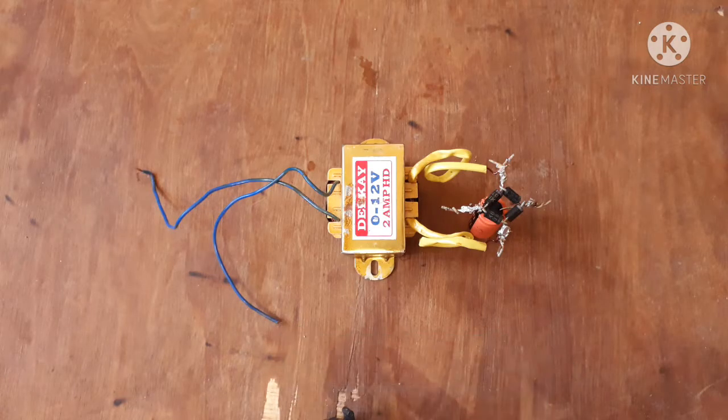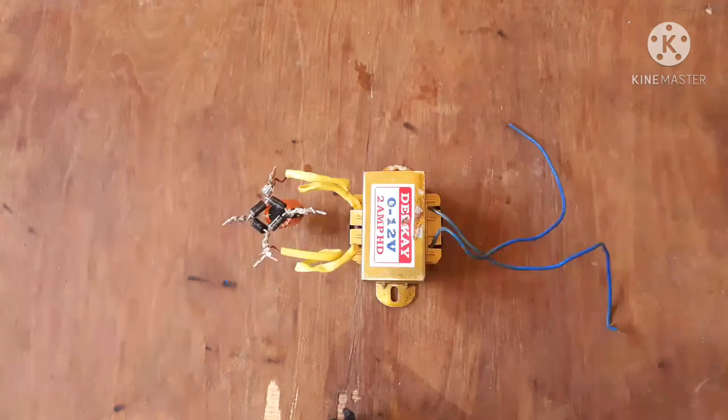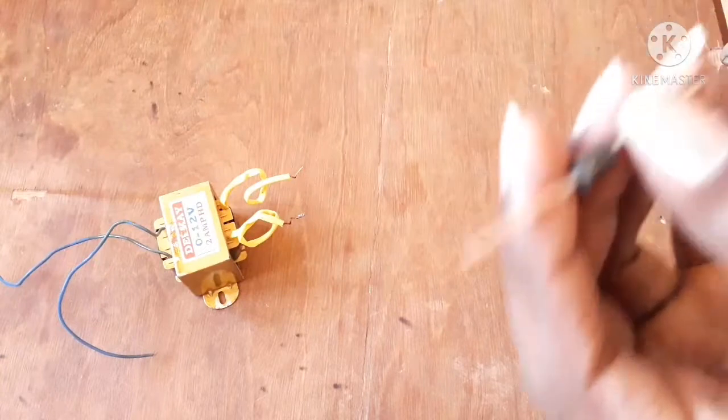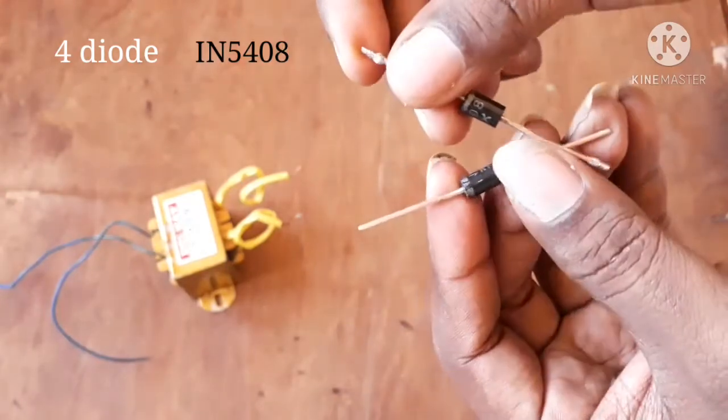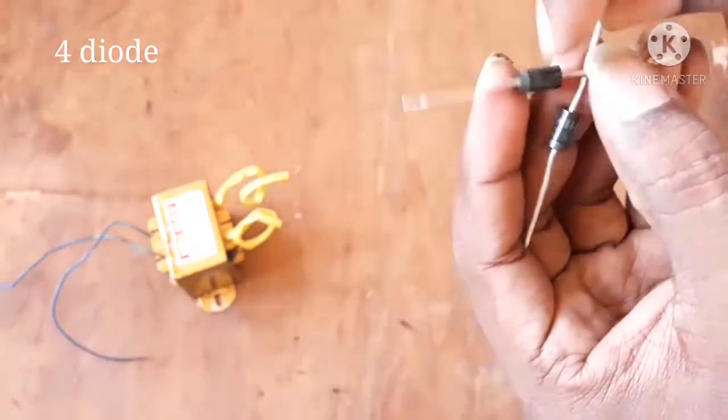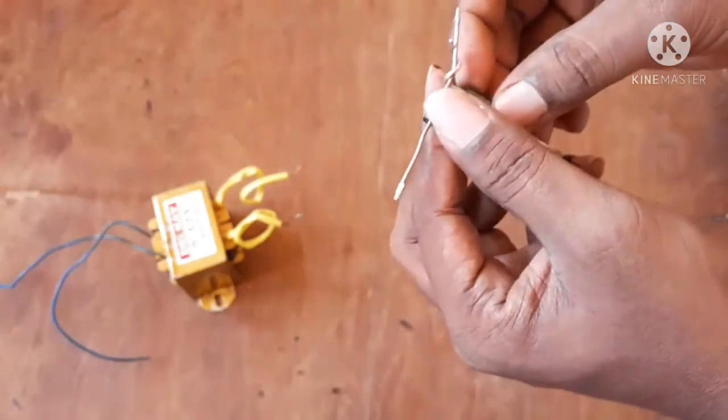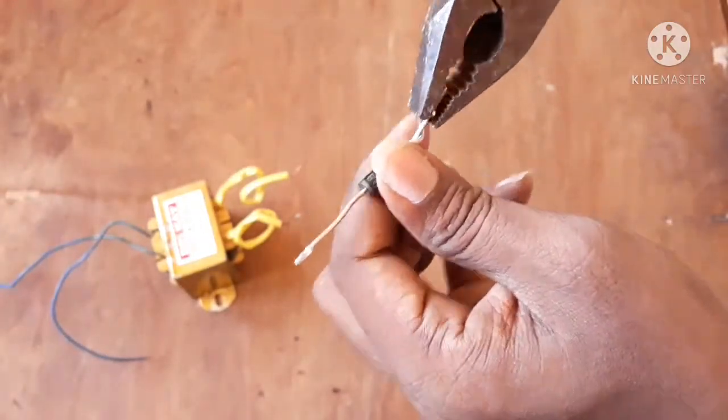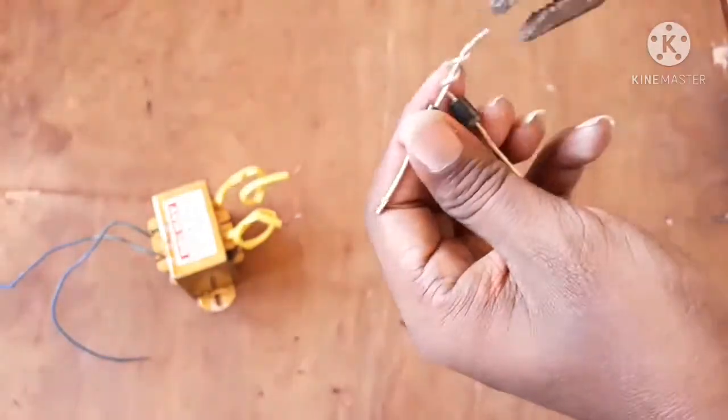Let's go to the video. First we have a transformer, 12V 2A. We have 4 diodes.